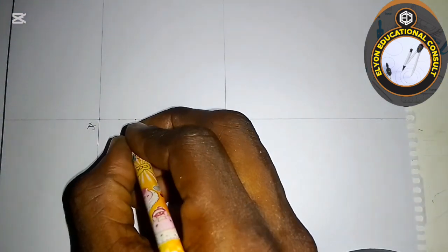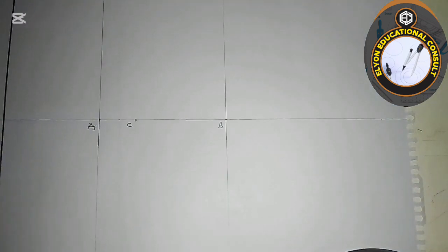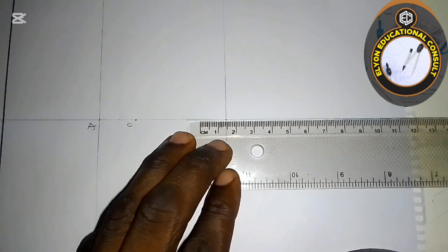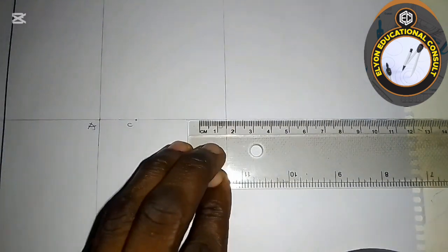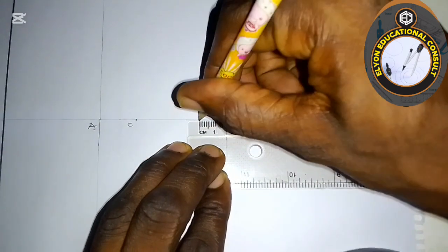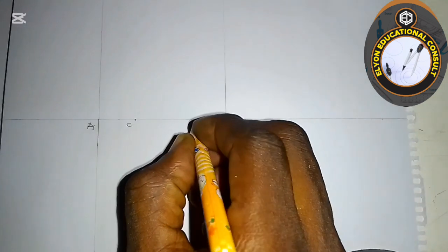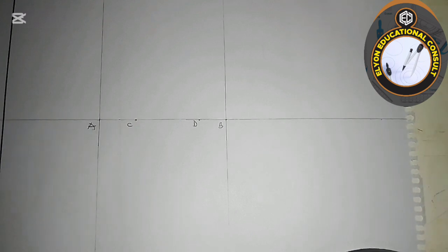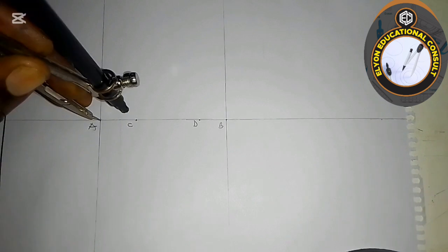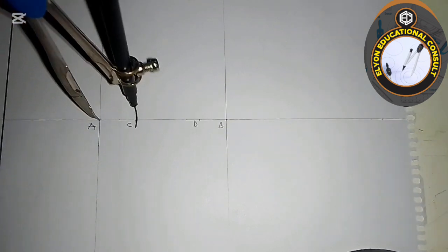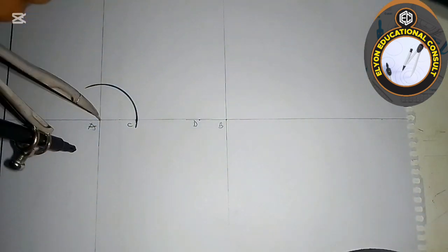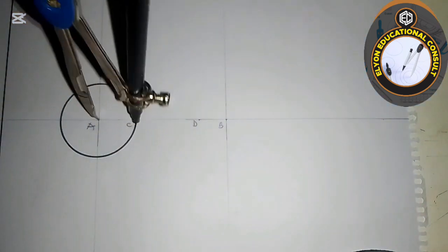I'll call that point C. For the other circle, the diameter is 30, so the radius is 15. I mark that point as D. Now I place the compass needle at point A, extend it to C, and draw the first circle of diameter 40.